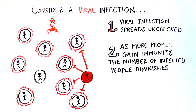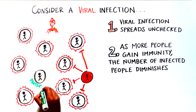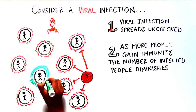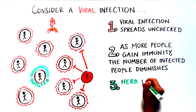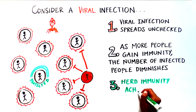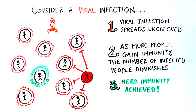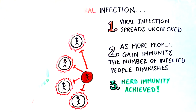Even those who haven't been infected or vaccinated are protected — we have achieved herd immunity. Achieving herd immunity requires the number of immune individuals to reach a certain threshold. So what is that threshold?